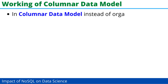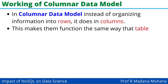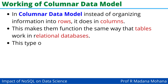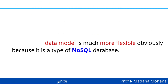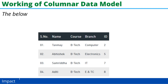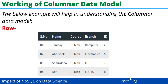In the columnar data model, instead of organizing information into rows, it organizes data in columns. This makes them function the same way that tables work in relational databases. This type of data model is much more flexible, obviously because it is a type of NoSQL database. The below example will help in understanding the columnar data model.